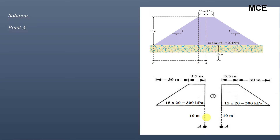To find the vertical stress increase, we will use the Osterberg chart to find the influence value. When we multiply the influence value by the unit load, we will get the value of vertical stress increase at point A. So we need to find the influence factor.